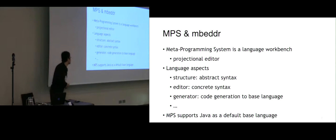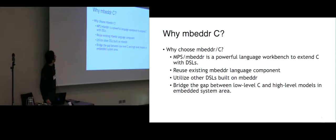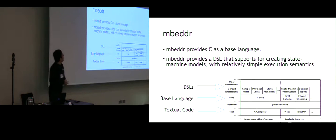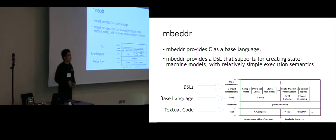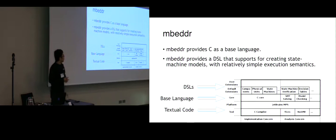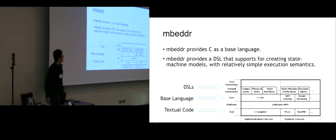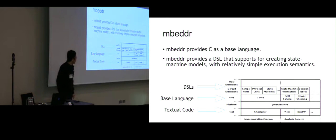MPS supports Java as a default base language, while Embedder provides C as a base language. At the highest level, those are DSLs that the language will create. They're going to be converted into models in the base language, and finally into textual C code, which can be compiled by a C compiler for execution.